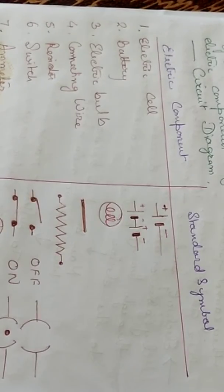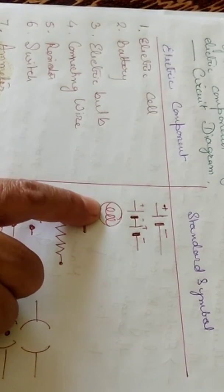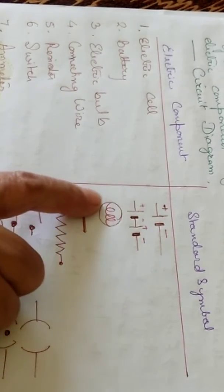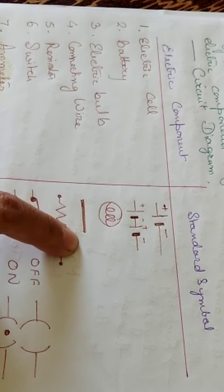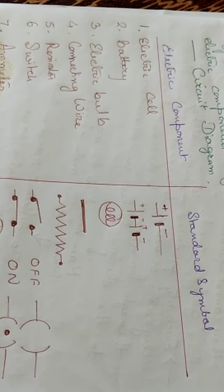Now, electric bulb - we show a filament type within a circle. Then the connecting wire should be a bold straight line.